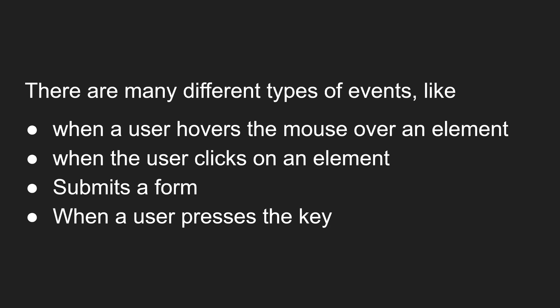There are many different types of events. For example, when a user hovers the mouse over an element — such as an anchor element, a button, or an image — that is an event, that is an action. When a user clicks on an element — such as an anchor link, a button, an image, text, a logo, or anything in the navigation menu — that is also an event.